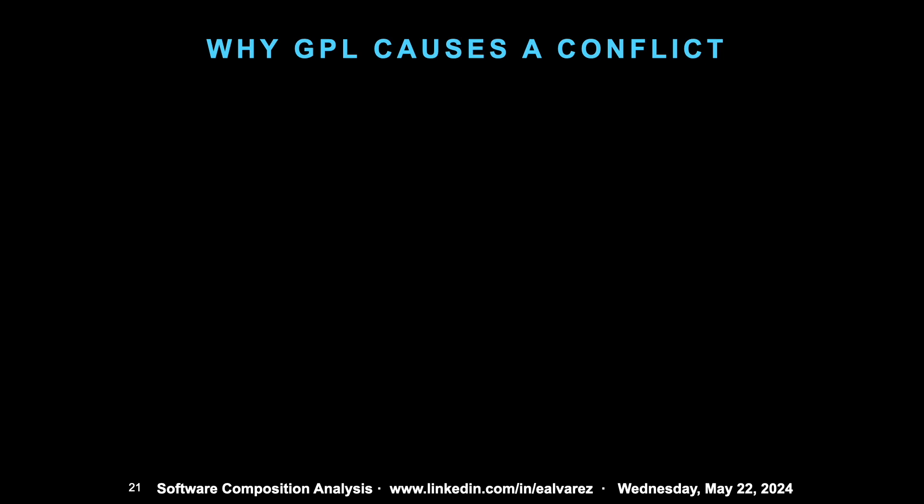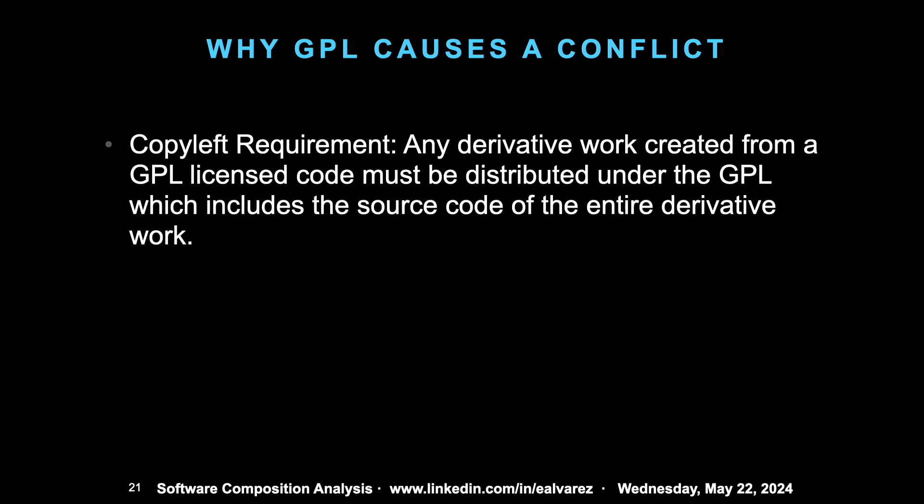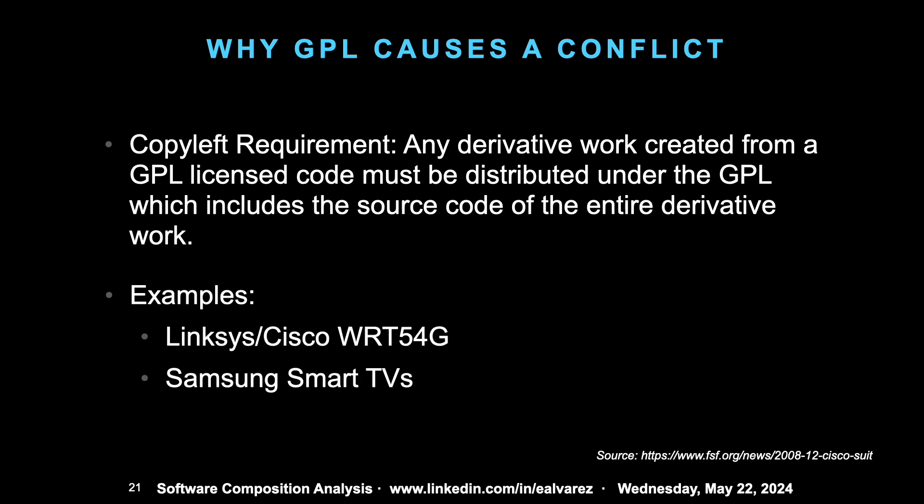Why does it cause this conflict? There's a thing called the copyleft requirement, where any works using GPL code must be distributed under the GPL itself — including the code of the derivative work. Examples of this are Linksys with their famous router and Samsung TVs, where in the case of Linksys they had to release the source code per license, and it spawned a whole generation of open-source-based router firmware.